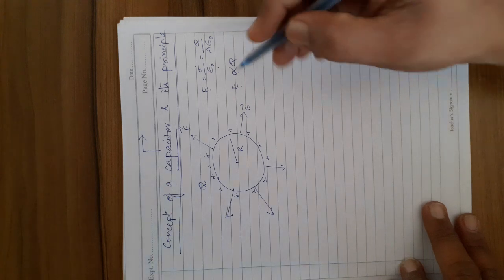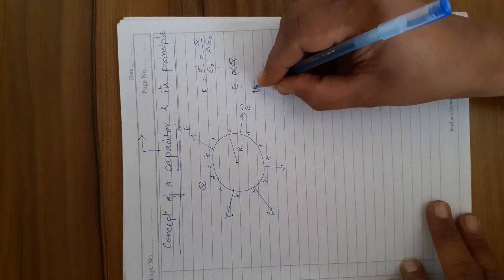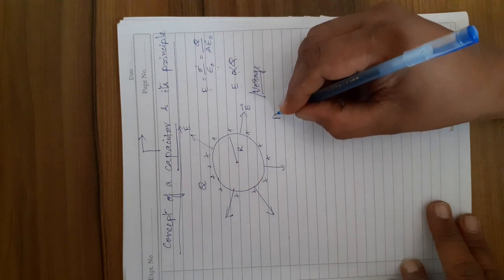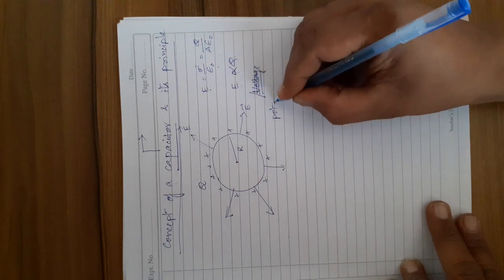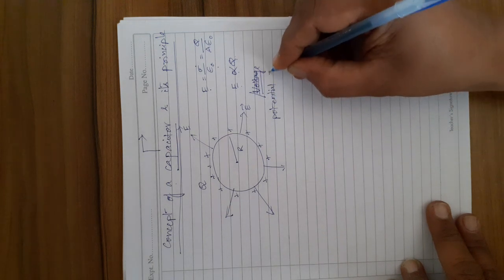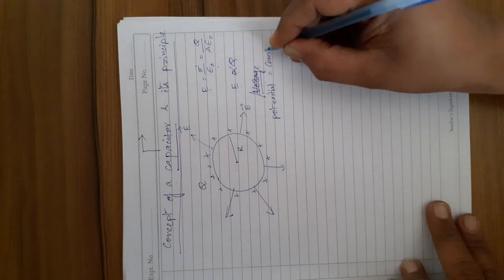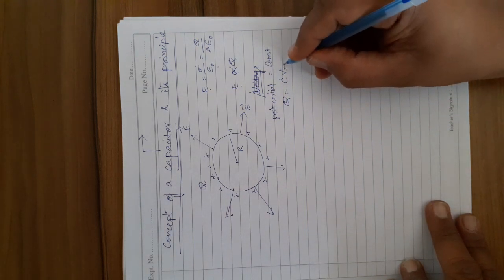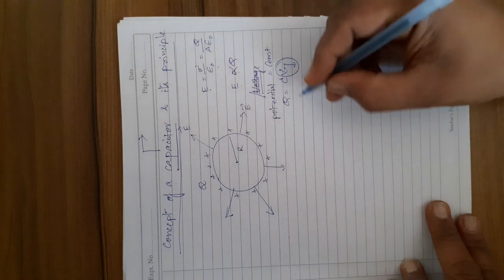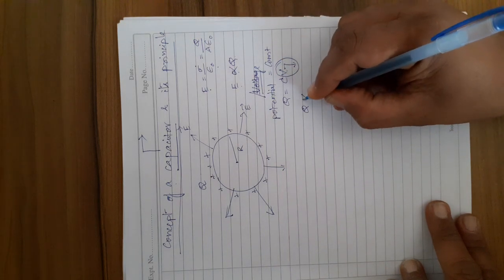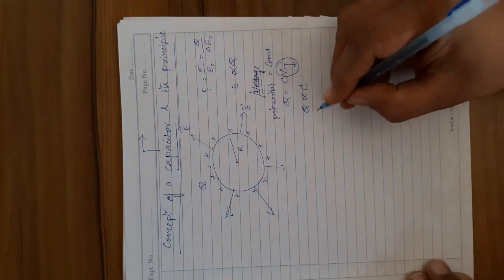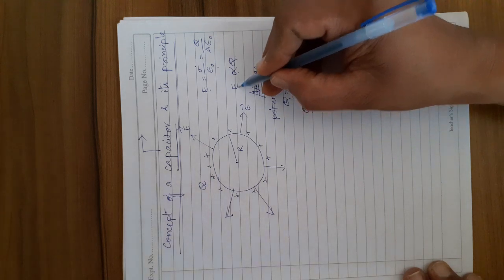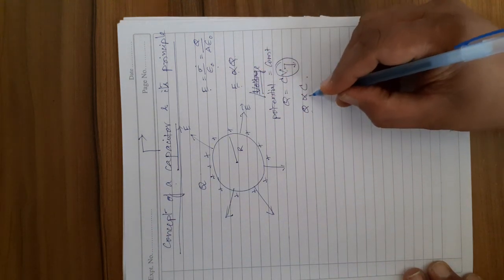Next point: in order to have a constant potential or voltage, we have the relation Q equal to C into V. So if you want to have a constant potential, then Q is proportional to capacity. That means charge is proportional to capacity, and electric field is proportional to charge, which in turn is proportional to capacity.